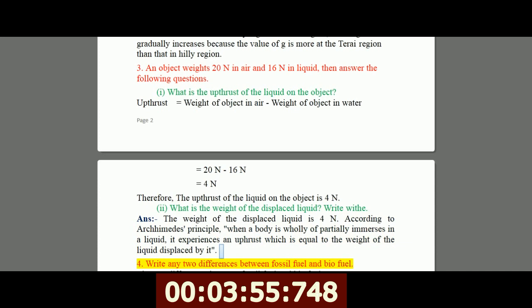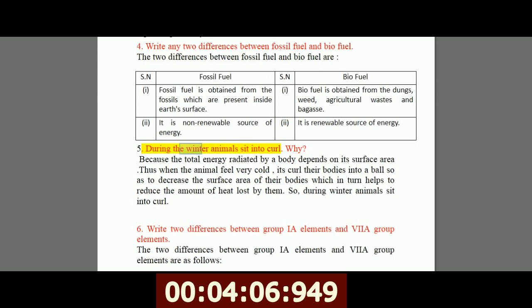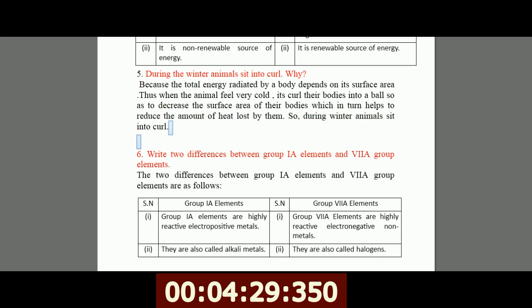4. Write any two differences between fossil fuel and biofuel. 5. During the winter animals sit in a coil. Because the total energy radiated by a body depends on its surface area, thus when the animal feels very cold, it curls their bodies into a ball so as to decrease the surface area of their bodies which in turn, helps to reduce the amount of heat lost by them. So, during winter animals sit in a curl.